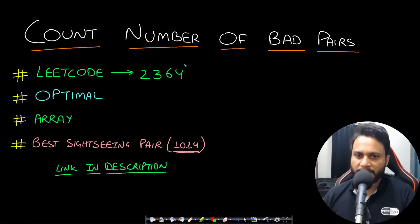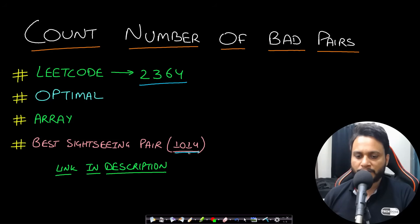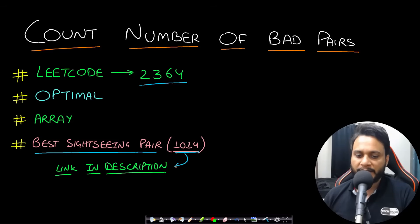Welcome back to TechDose. In this video we will see the 'Count Number of Bad Pairs' problem, which is LeetCode number 2364. The technique used in this problem will also be shown in problem 1014. A good prerequisite problem is the 'Best Sightseeing Pair' problem, which has already been explained in a previous video — the link is in the description below.